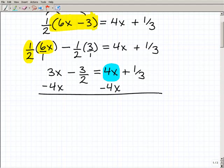So I'm going to subtract 4x from both sides of the equation. And by the way, if you're a little bit lost, you might want to stop watching this video and go back to more basic equations, because it's the same steps. Just here, we're involving fractions. So if you're not quite sure why I'm doing something, you might want to go back and review some more basic equations. But here, I'm going to be subtracting 4x from both sides of the equation. And I get negative 1x minus 3 halves equals 1 third.